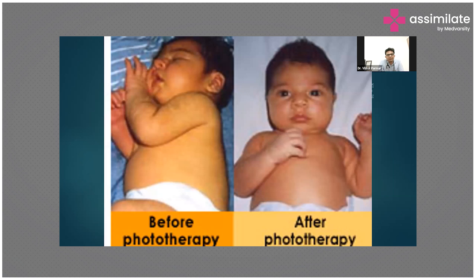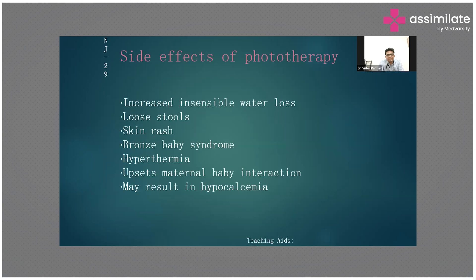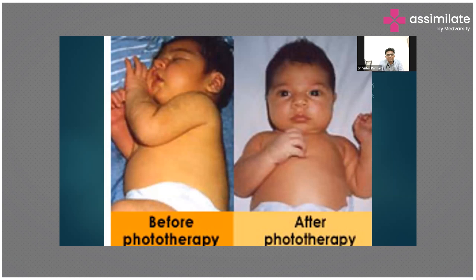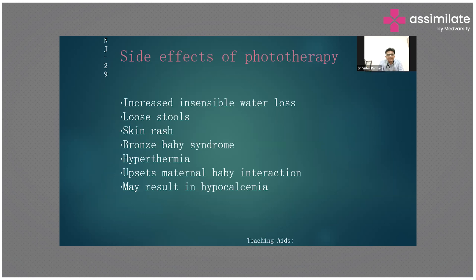Regarding phototherapy before and after effects: sometimes the baby becomes brown — we call this bronze baby syndrome. Side effects of phototherapy include insensible water loss, loose stools, skin rashes, bronze baby syndrome, hyperthermia, and disruption of maternal-baby interaction. It can interfere with bonding between the mother and baby, and sometimes it may result in hypotension.